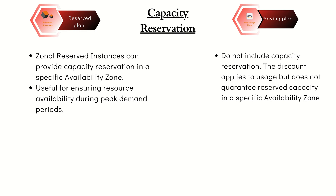Now let's talk about capacity reservation. When it comes to Saving Plan, they do not guarantee capacity within a specific availability zone. But when it comes to Reserved Instance, they ensure compute capacity is available within a specific availability zone. Reserved Instance also guarantees availability of EC2 machines during peak times such as disaster recovery, whereas Saving Plan does not guarantee this — it lacks the assurance that a specific resource will be available when needed.